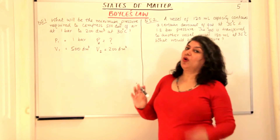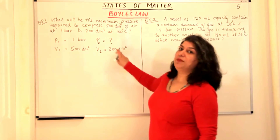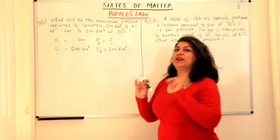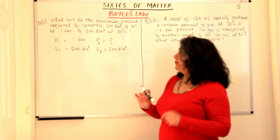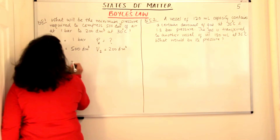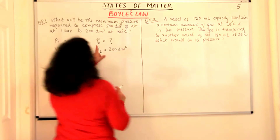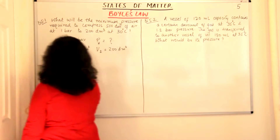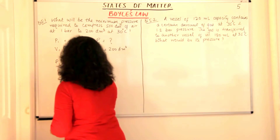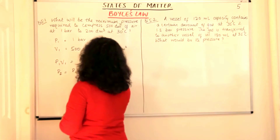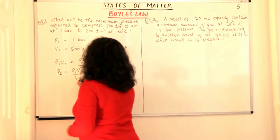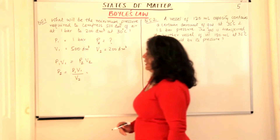When you solve these numericals, always remember the units of volume should be the same and the units of pressure should be the same. You can only mathematically solve a question where the units for one particular quantity are the same. So now we use the relation P1 V1 = P2 V2. We are looking for P2, so rearranging: P2 = P1 V1 / V2.